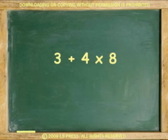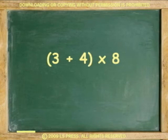If you add 3 and 4, and then multiply by 8, you'll arrive at the wrong answer. If you want to add first, you must place the addition in parentheses. Now you can add 3 and 4, and then multiply by 8 to get 56. Notice the different answers.